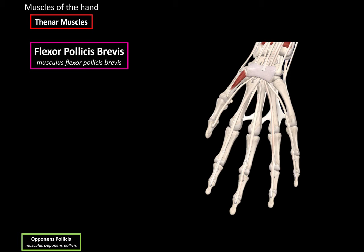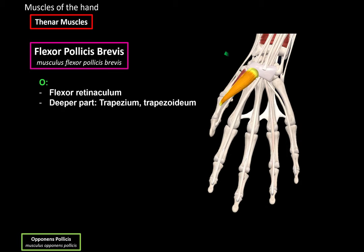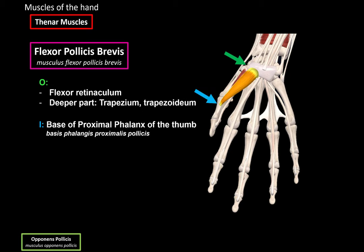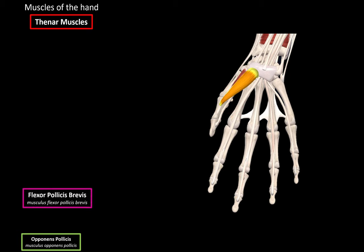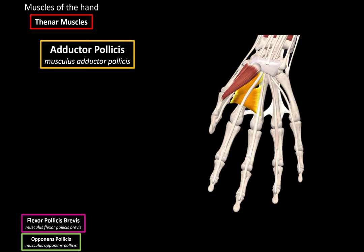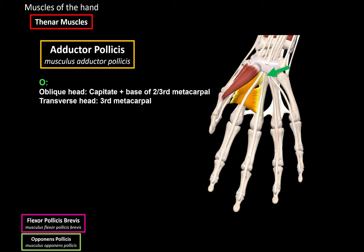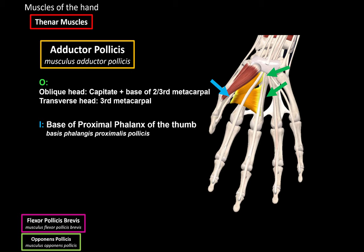Next we have the Flexor Pollicis Brevis, which is this muscle right here. It originates from the Flexor Retinaculum, and the deepest part originates from the distal wrist bones — the Trapezium and Trapezoideum. It inserts at the base of the proximal phalanx of the thumb, and its function is more or less the same as the Opponens Pollicis. Next we have the Adductor Pollicis. It has an oblique head and a transverse head. The oblique head originates from the capitate and the base of the second to third metacarpal bones, and the transverse head originates from the third metacarpal bone. They both insert at the base of the proximal phalanx of the thumb, and the function is adduction of the thumb.